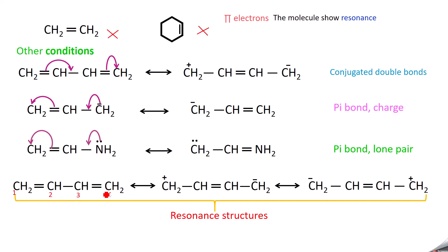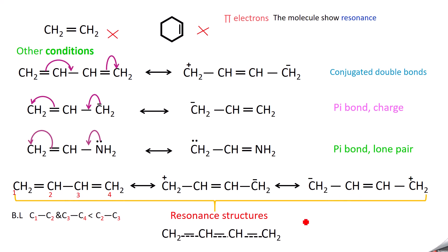Now number the four carbon atoms. The bond lengths of C1-C2 and C3-C4 are expected to be shorter than C2-C3. However, experiments show that all carbon-carbon bond lengths are equal. When you mix all the resonance structures you get the resonance hybrid — a real structure — where all carbon-carbon bond lengths are found to be the same. This example is given in your book.